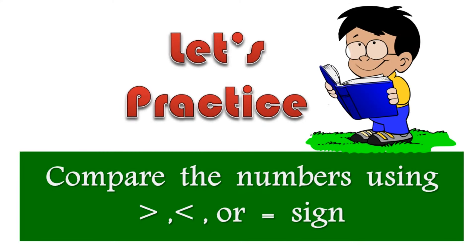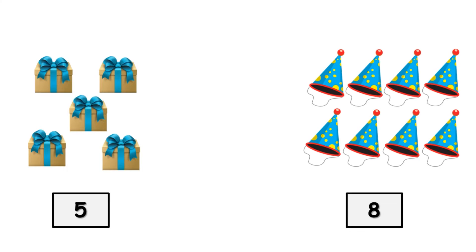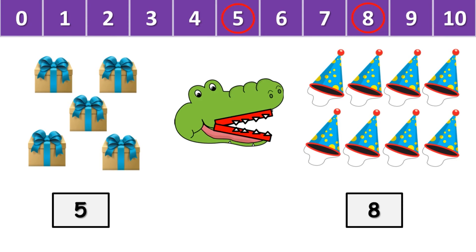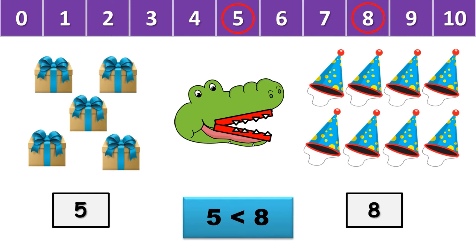Let's practice. Here, we have 5 gift boxes on the left side, and 8 birthday caps on the right side. We know that on the number strip, number 5 comes before number 8. So, where will the crocodile open his mouth? Towards the big number, 8. And the back of his mouth will point towards the small number, 5. It is written as: 5 is less than 8.